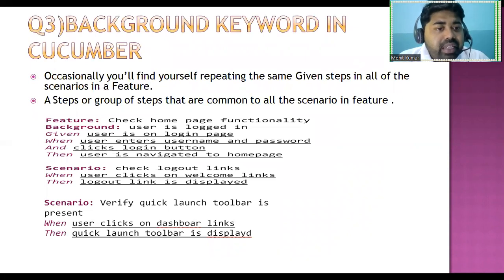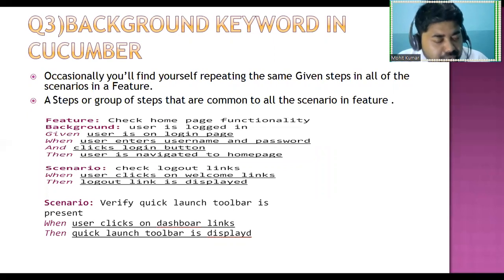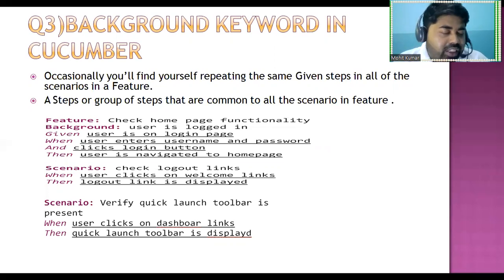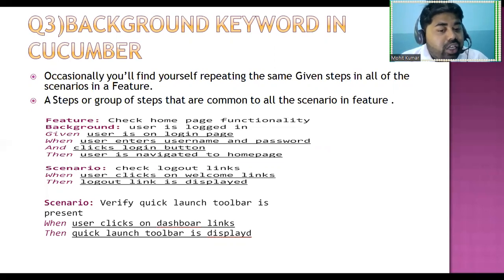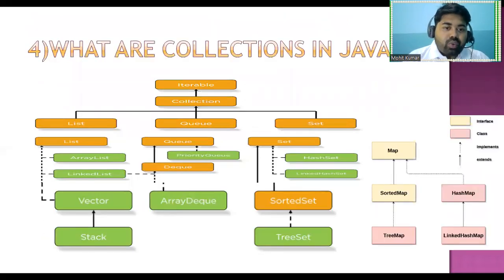Next is the background keyword in Cucumber. Background is where you write common steps shared across multiple scenarios. For example, if you have 10 scenarios where login and logout is common functionality, you write those common steps inside background — such as 'check home page functionality', 'user is logged in', 'user enters email'. Those common steps are written inside background, and then each scenario uses them.